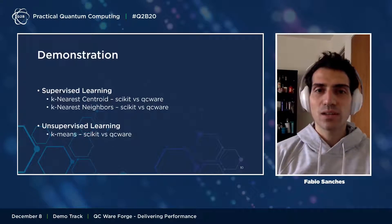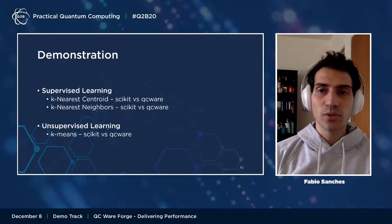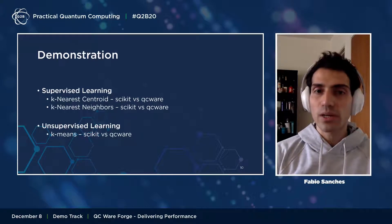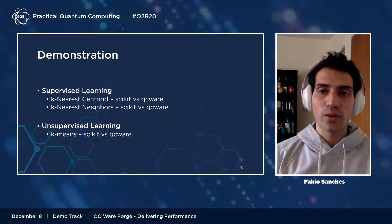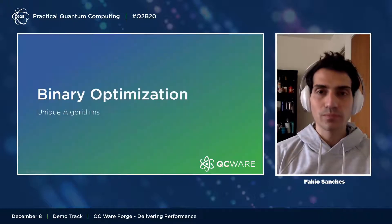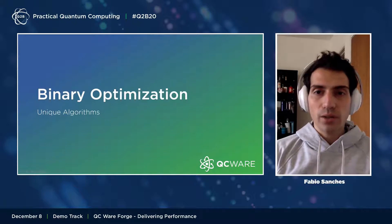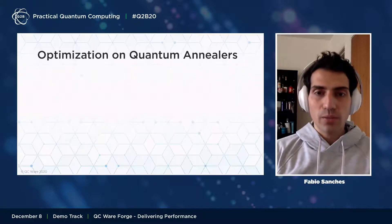As you saw, it's pretty straightforward to use the quantum machine learning algorithms we've built, and they directly compare with the functionality many of you already know from scikit-learn. Now I want to move on to the binary optimization library.